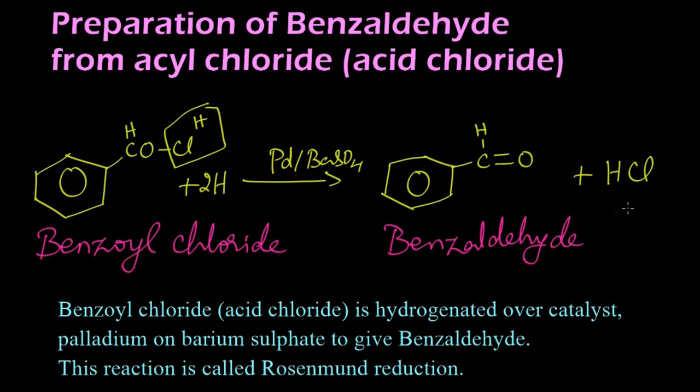Let us summarize the reaction. Benzoyl chloride, that is acid chloride, is hydrogenated over a catalyst — palladium on barium sulphate (BaSO4) — to give benzaldehyde. This reaction is called Rosenmund Reduction. Thank you.